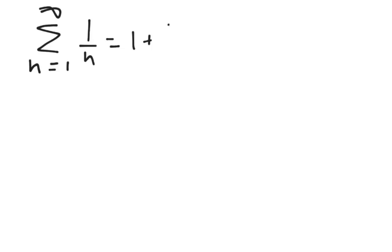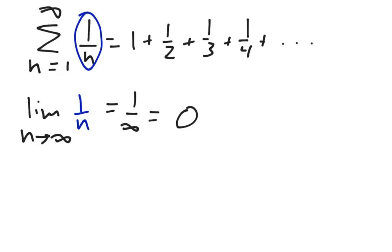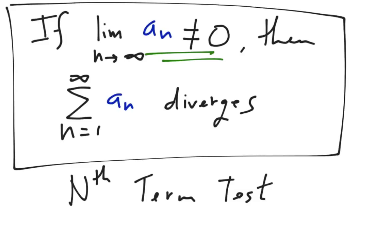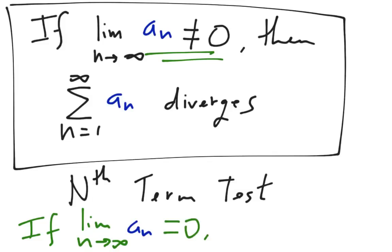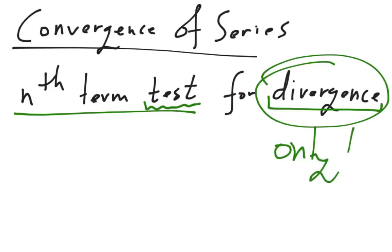Another example: the series from 1 to infinity of 1 over n, which gives us 1 plus 1/2 plus 1/3 plus 1/4, and so on. Applying the nth term test, we take the limit as n approaches infinity of 1/n, and we get 0. Now you have to be careful — if the limit equals 0, the test is inconclusive. You don't know if the series converges or diverges. That's why it's called the nth term test for divergence only. You cannot use it to confirm convergence.